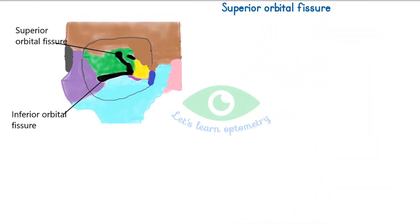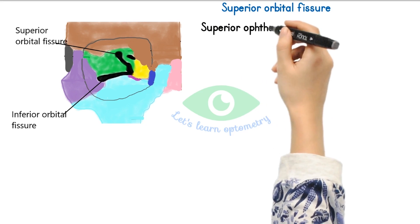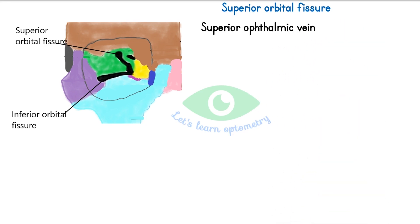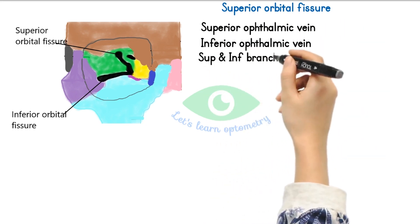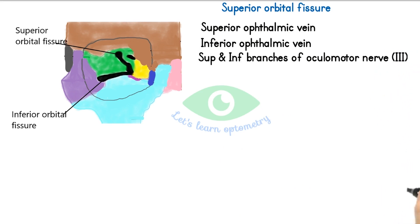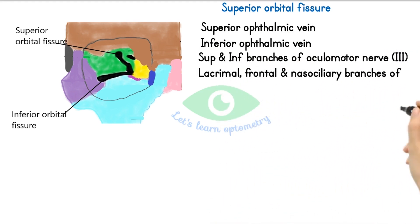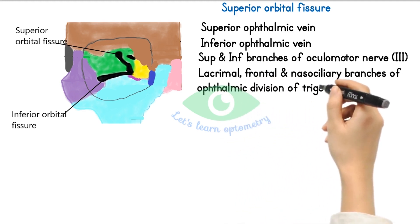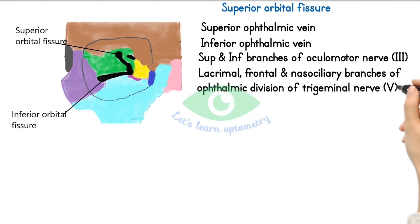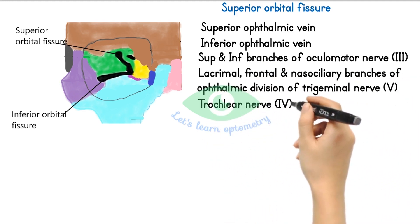The superior orbital fissure is located between the greater and the lesser wing of the sphenoid bone. It transmits the superior ophthalmic vein, a branch of the inferior ophthalmic vein, superior and inferior branches of the oculomotor nerve, and the lacrimal, frontal and nasociliary branches of the ophthalmic division of the trigeminal nerve, as well as the trochlear nerve and the abducent nerve.